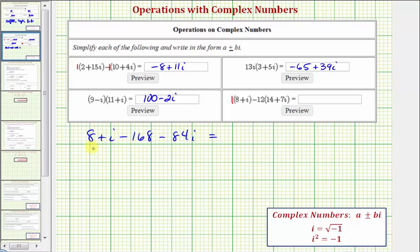And now simplifying, we have 8 minus 168. That's negative 160. And then we have i or 1i minus 84i, which would be negative 83i or minus 83i. So we have negative 160 minus 83i.